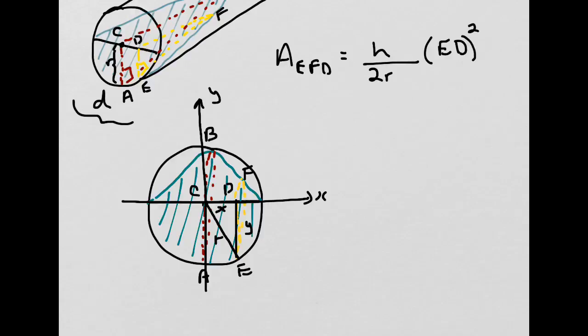And we know that angle CDE is a right angle. Therefore, using Pythagorean theorem, x squared plus y squared equals r squared. And given that y is the distance ED, x squared plus ED squared equals r squared.